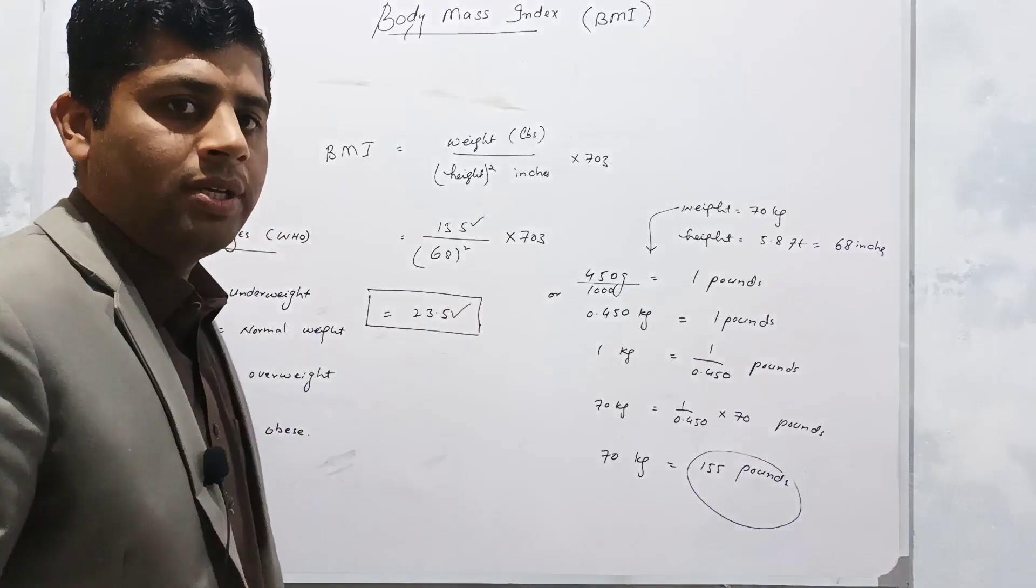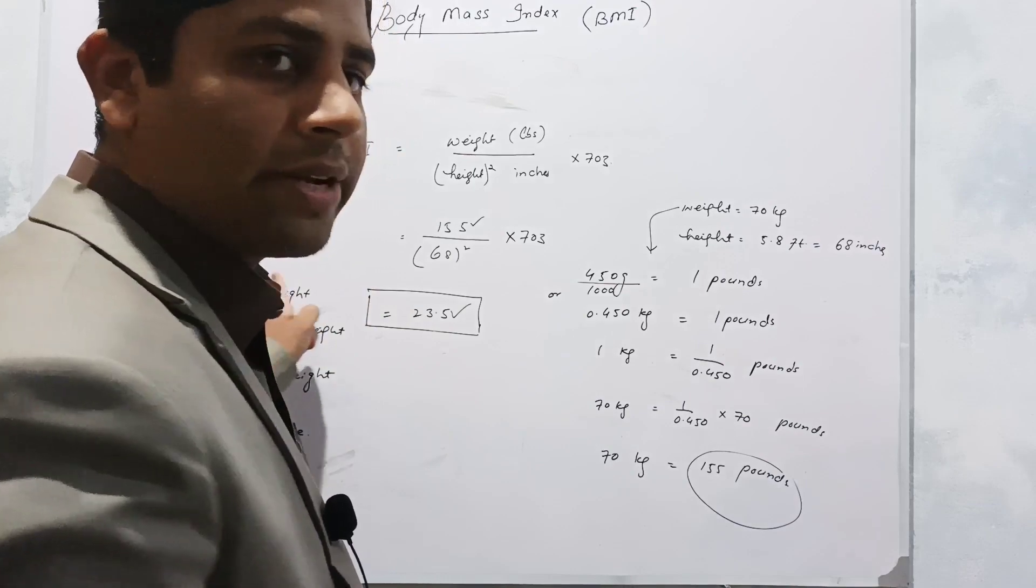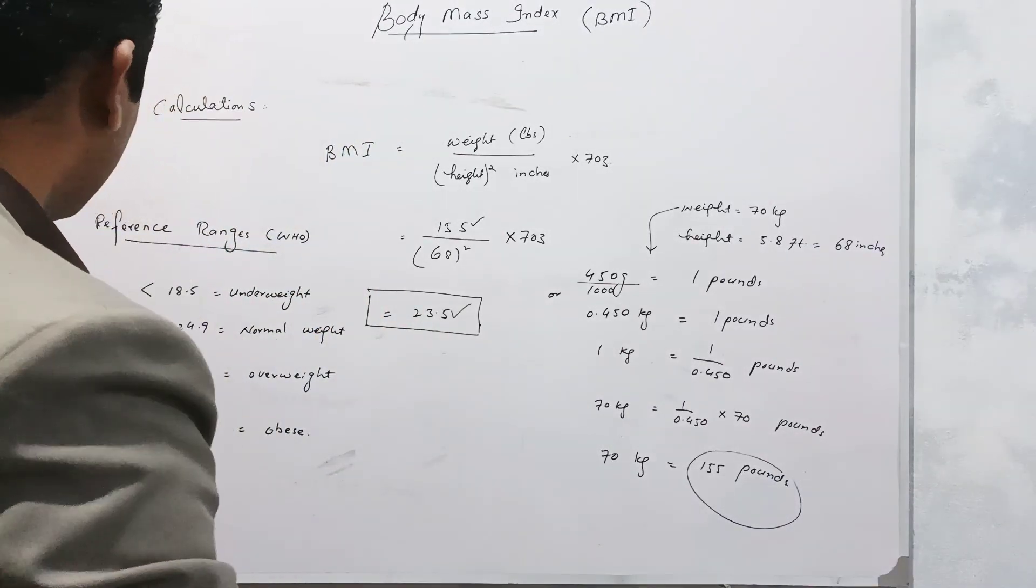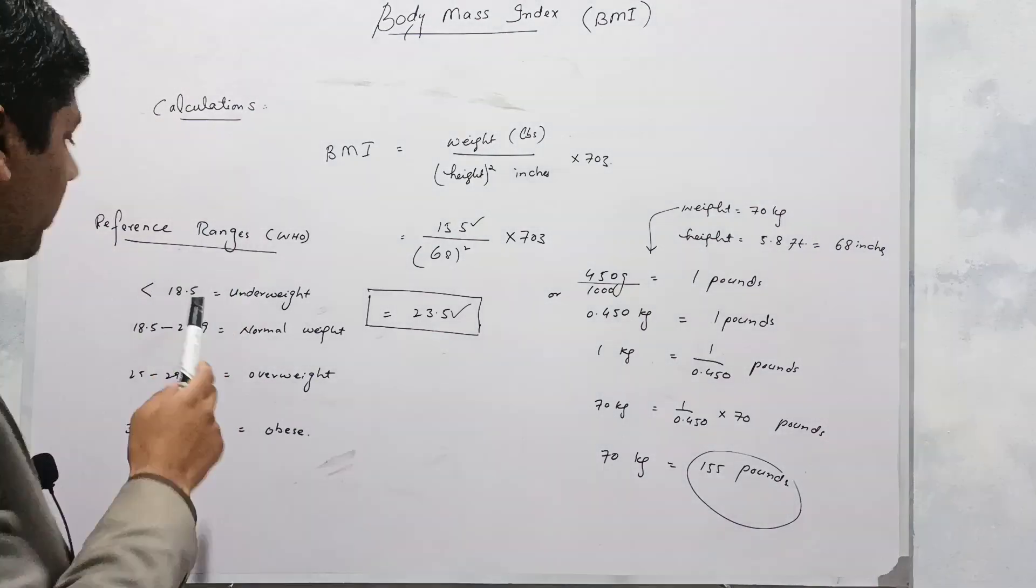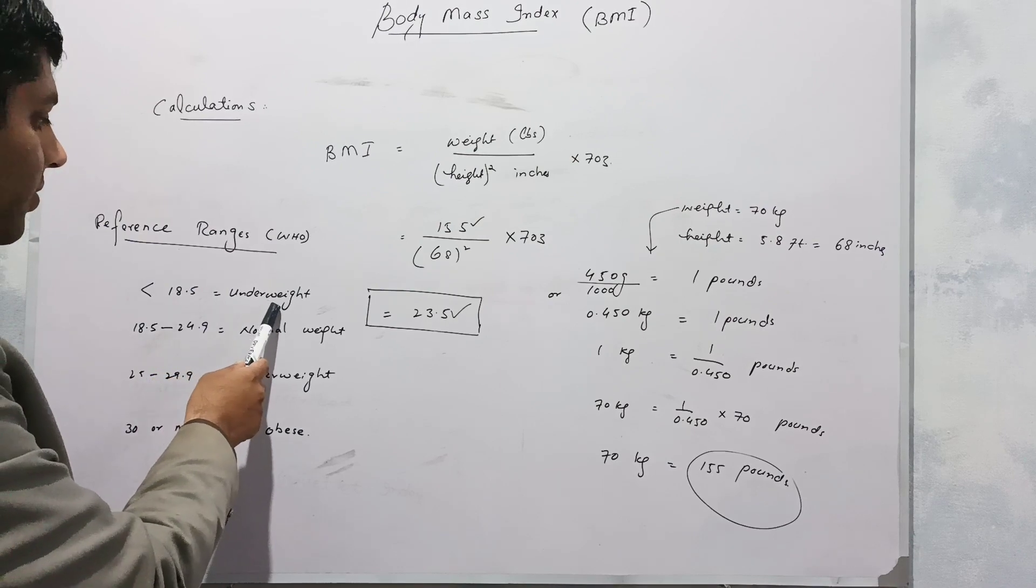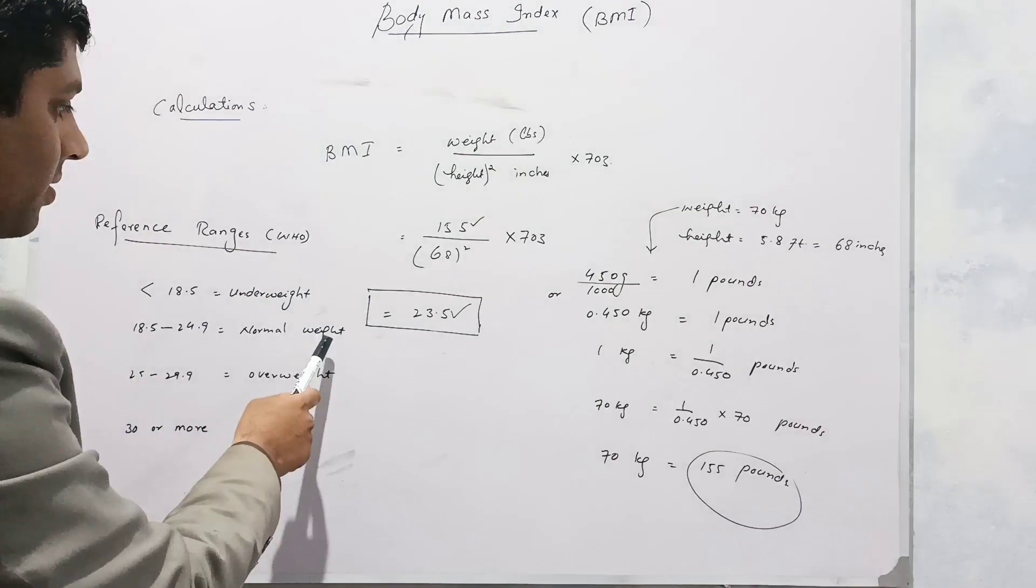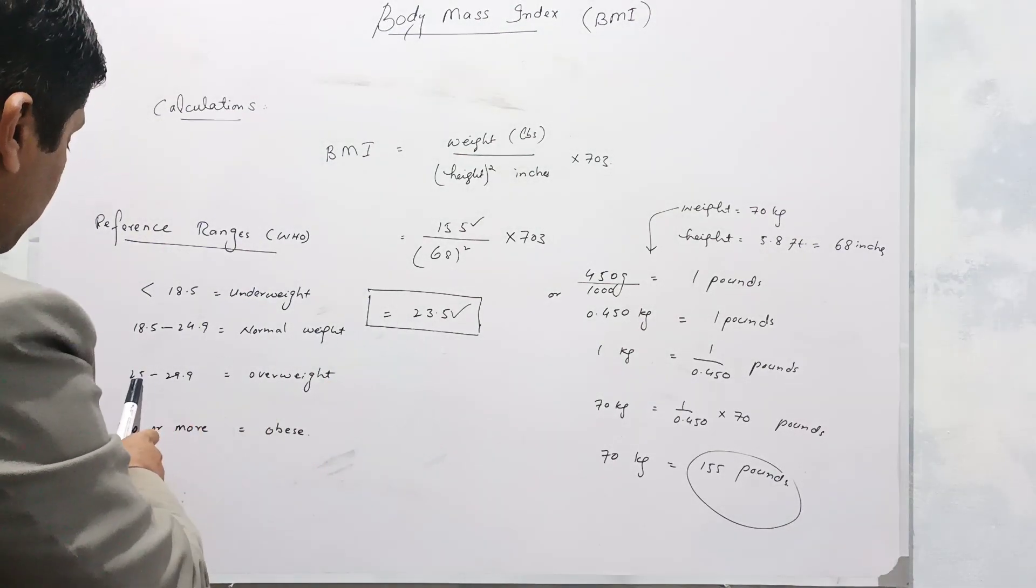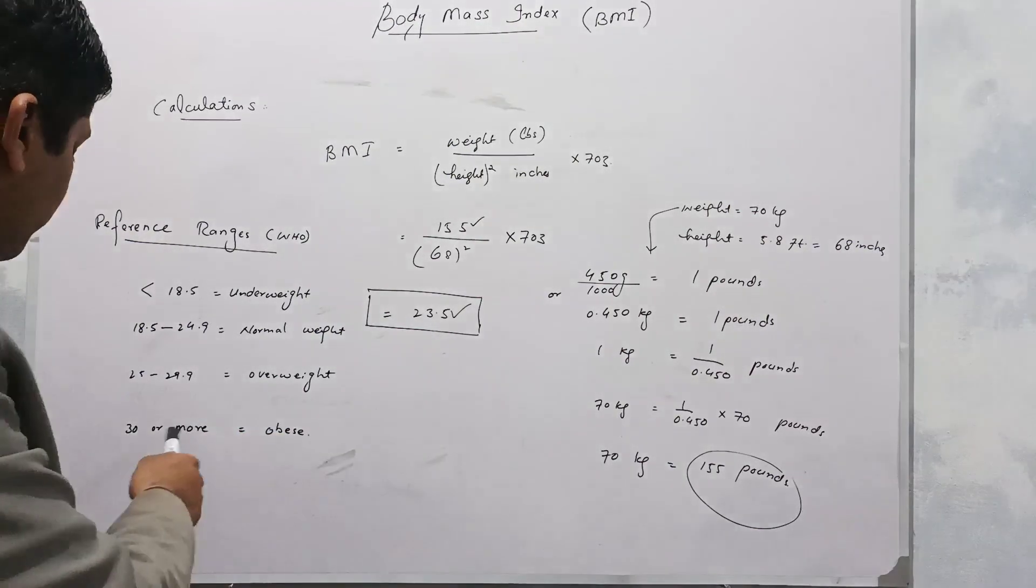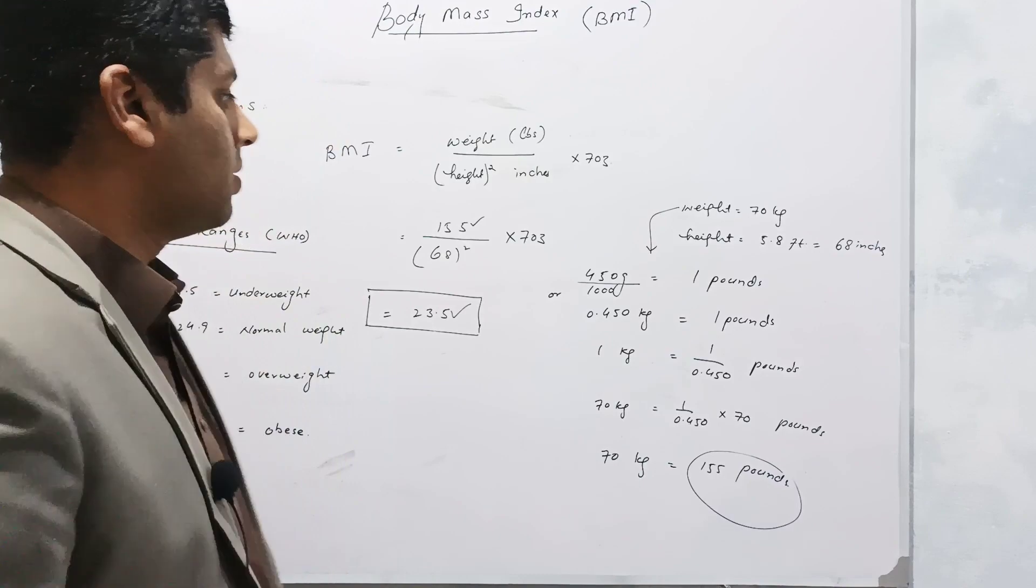After calculations, I found the figure 23.5. Then I will match this figure, the result, with the WHO declared reference ranges whether I am obese, underweight, or normal weight. Reference ranges declared by WHO are: if your factor comes below 18.5, you are underweight. If it lies between 18.5 and 24.9, you're normal weight. As I am 23.5, I'm normal. 25 to 29.9 is overweight, and if your BMI is more than 30, you lie in the category of obesity.